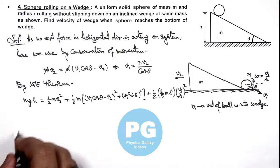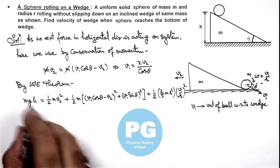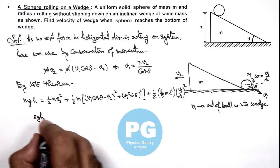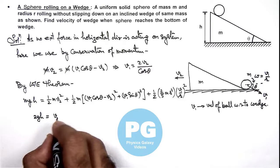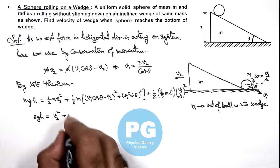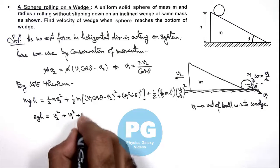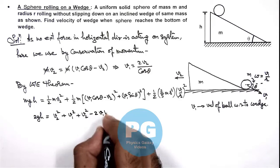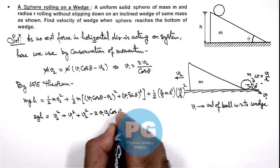Now if we simplify this relation, here this gives us m gets cancelled out in the whole equation. This gives us 2gh is equal to v2 square plus v1 square plus v2 square minus 2v1 v2 cos theta, plus